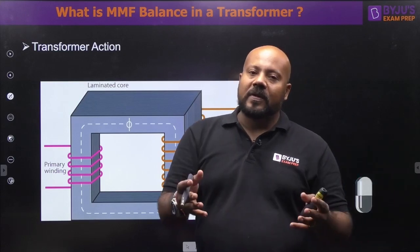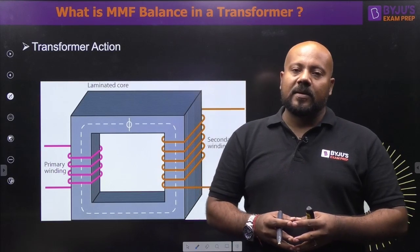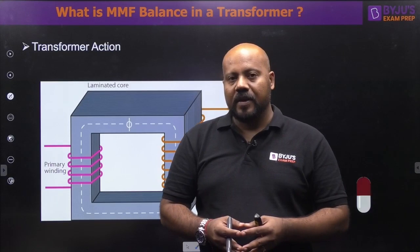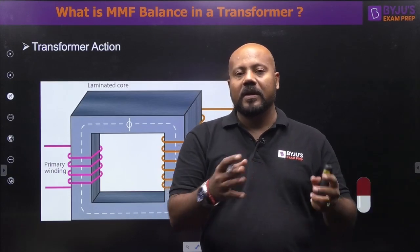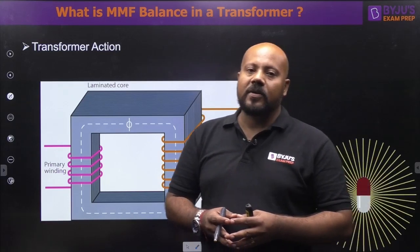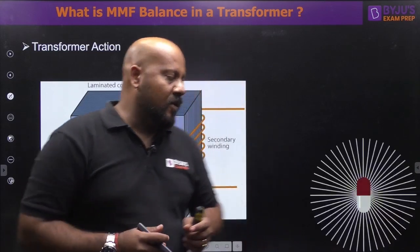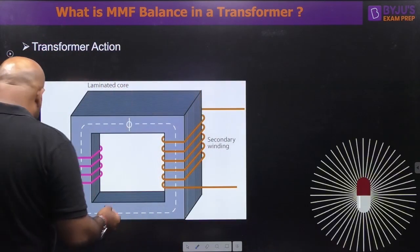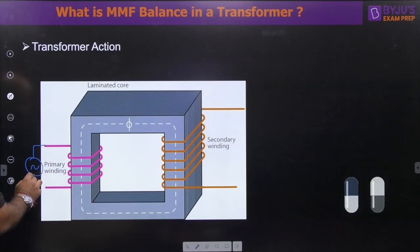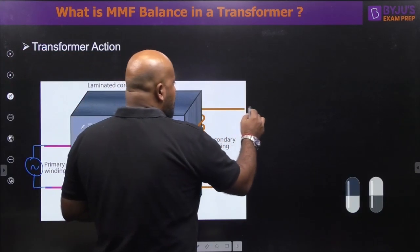More number of turns means more EMF and more voltage. In common practice, we define the primary winding as the winding where we connect the source — and you know that a transformer deals with an AC source — whereas the secondary winding is where we connect the load. So we have an AC source connected at the primary side and a load at the secondary side.